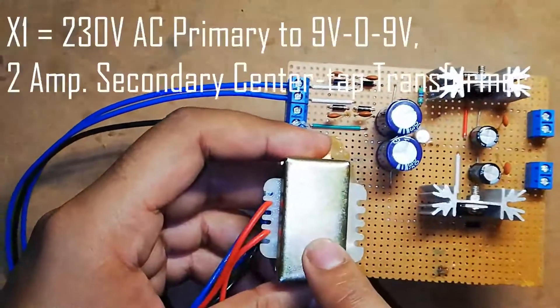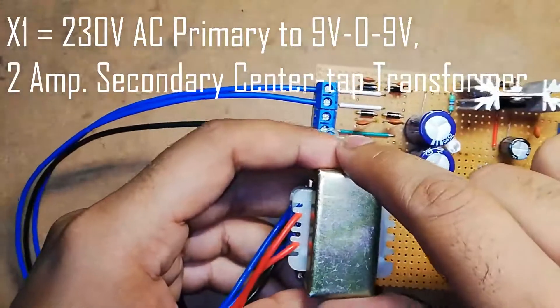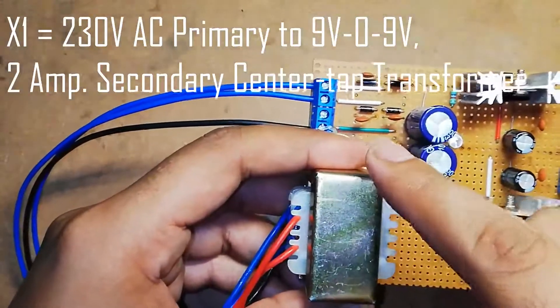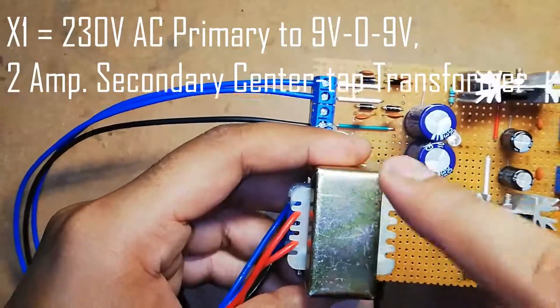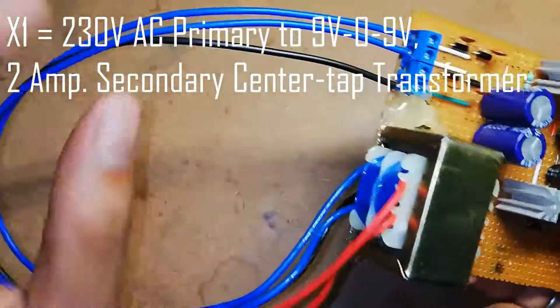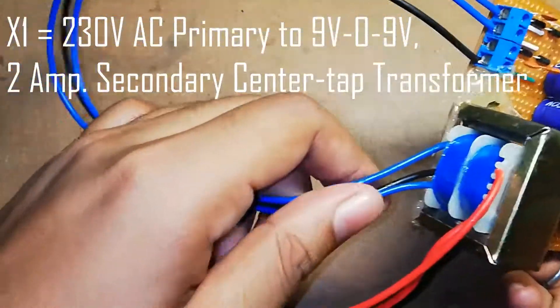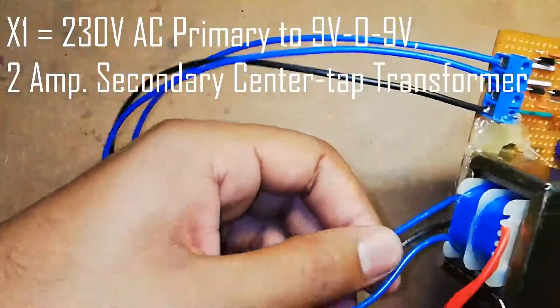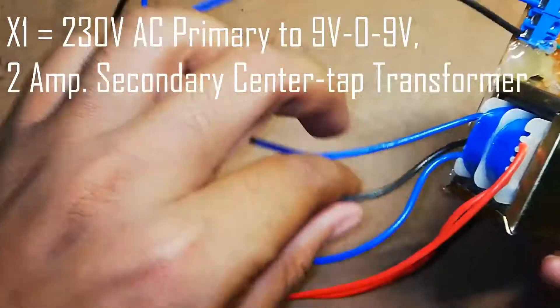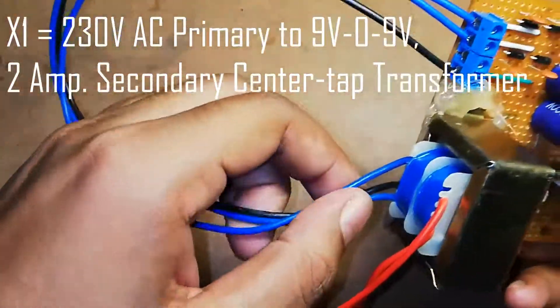Transformer X1 is rated 230 volt AC primary to 9 volt, 0 volt, 9 volt at 2 ampere secondary center-tap transformer. As you can see, this transformer is of center-tap type. This is for 9 volts, this is for 0 volts, and this is also for 9 volts.